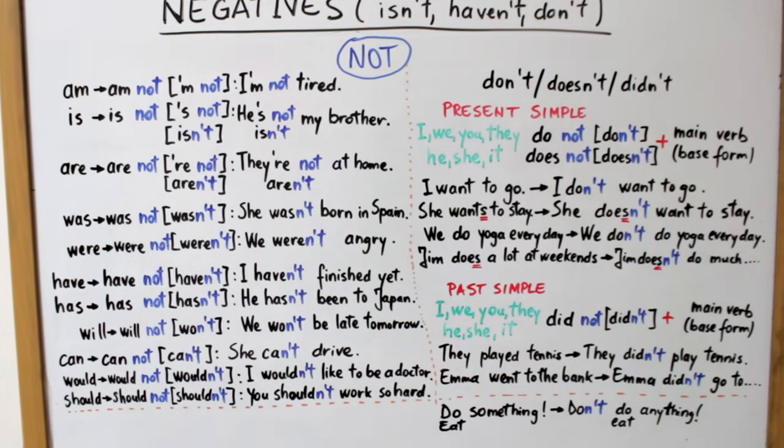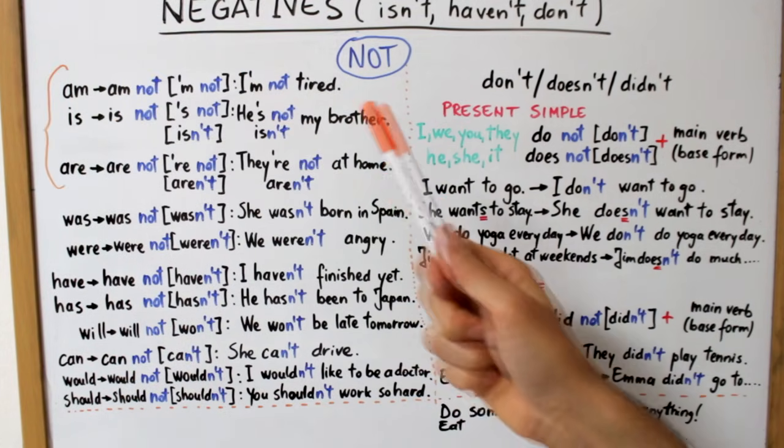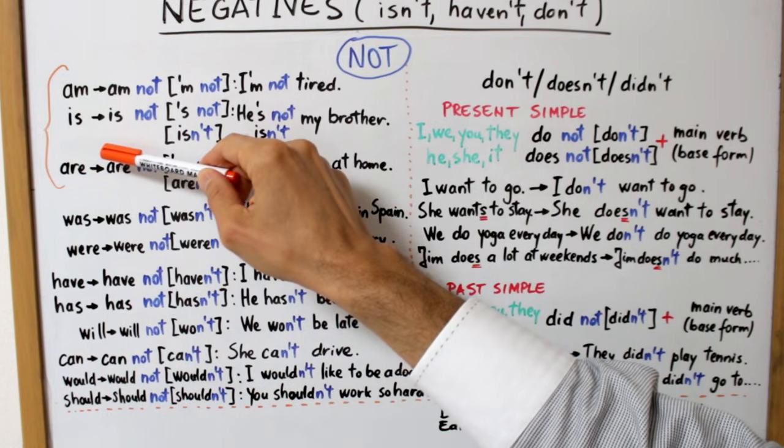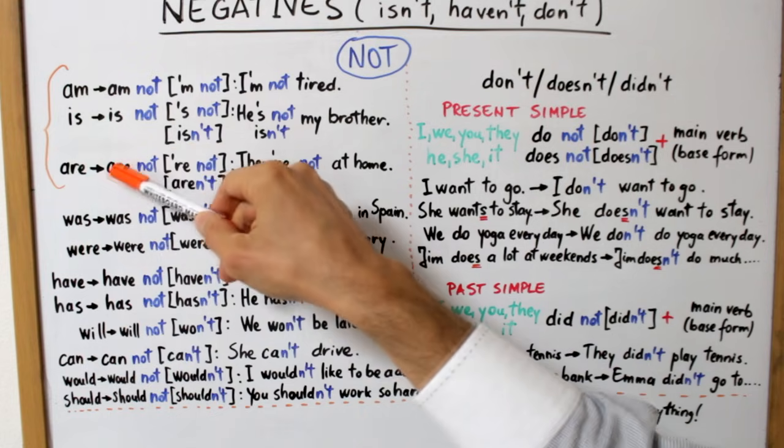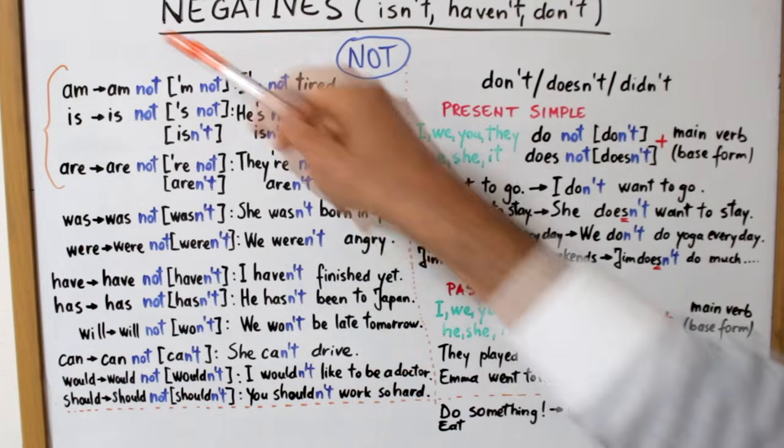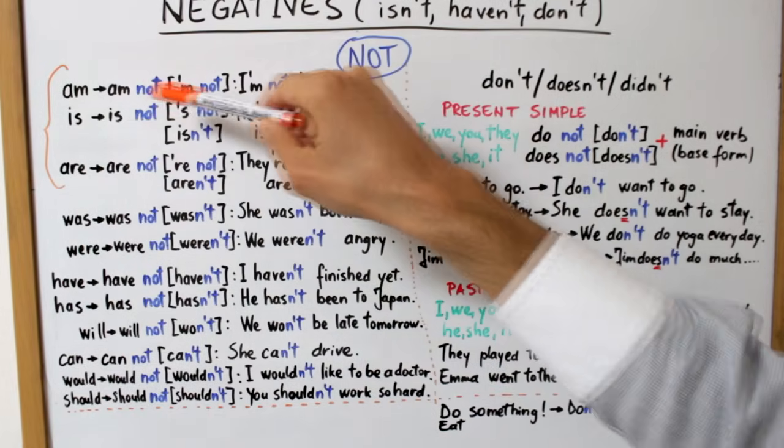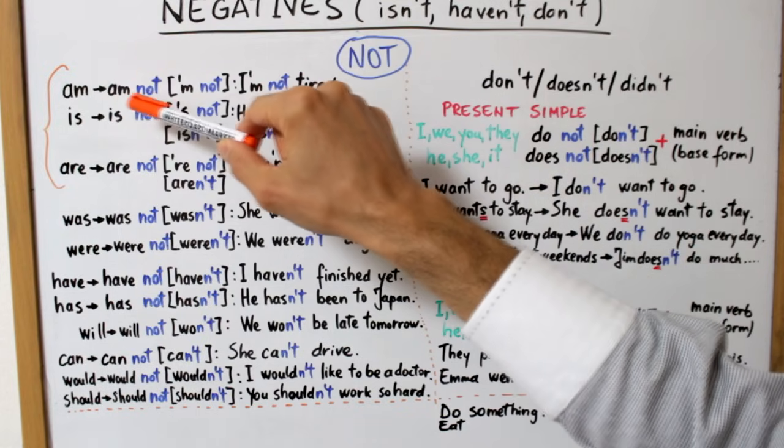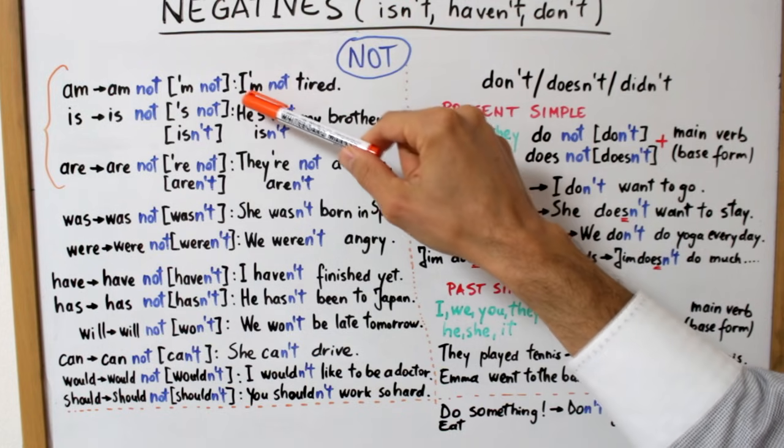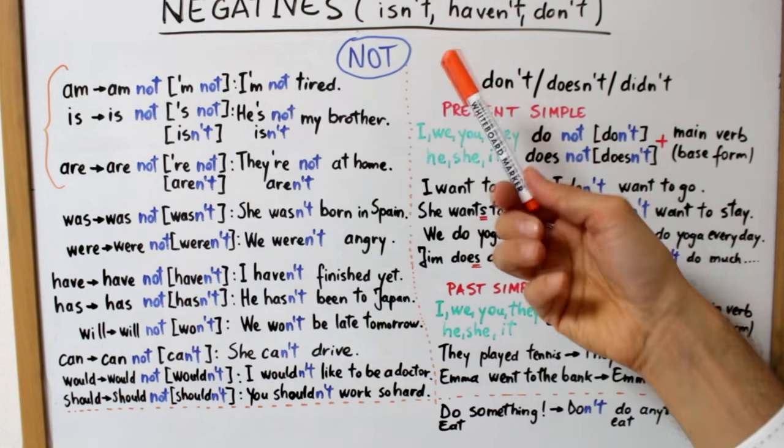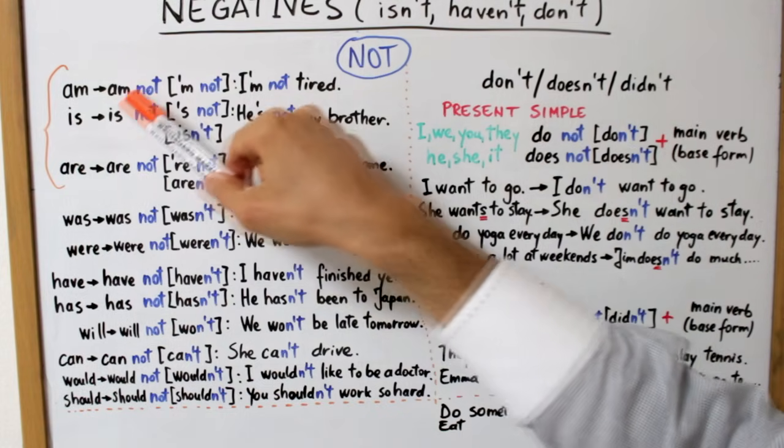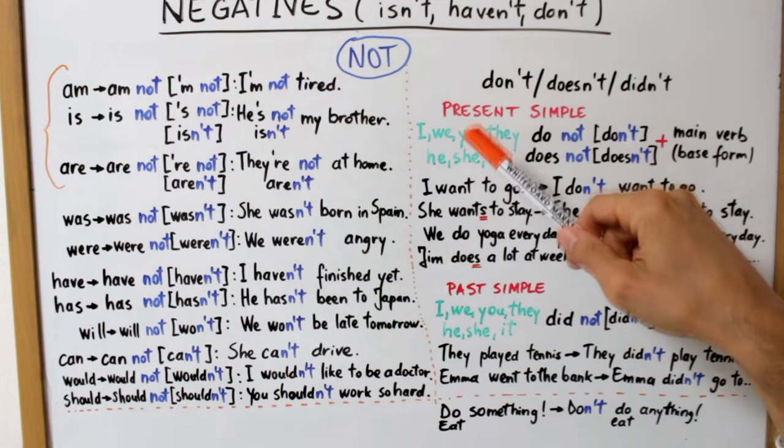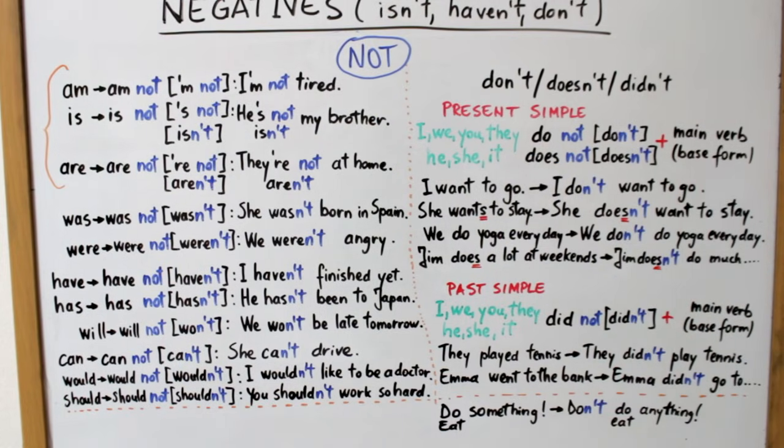Să începem cu formele de prezent ale verbului TO BE. A fi, cel mai des folosit verb din engleză. Formele acestuia sunt la afirmativ am, adică sunt, eu sunt, is, adică este, el sau ea, este, respectiv are, care înseamnă suntem sau sunteți, sau ești. Toate aceste trei forme primesc la negativ pur și simplu negația NOT atașată după verb. Deci AM devine AM NOT. Varianta scurtă ar fi M NOT. Deci dispare vocala A și este înlocuită cu un apostrof. Ca în exemplul I'M NOT TIRED. Eu nu sunt obosit. Dacă folosim forma lungă, I AM NOT TIRED, ar fi echivalentul românescului Eu nu sunt obosit. Dacă folosim varianta scurtă, I'M NOT TIRED, ar fi echivalentul românescului Eu nu sunt obosit.